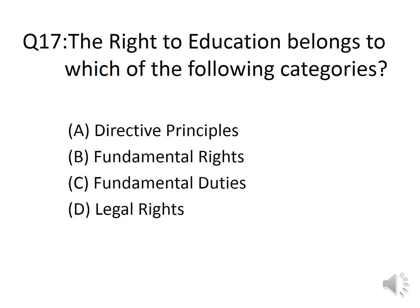Question 17: The right to education belongs to which of the following categories? Options: A. Directive Principles, B. Fundamental Rights, C. Fundamental Duties, D. Legal Rights. The correct answer is Option B, Fundamental Rights. There are 6 fundamental rights given in the Constitution.